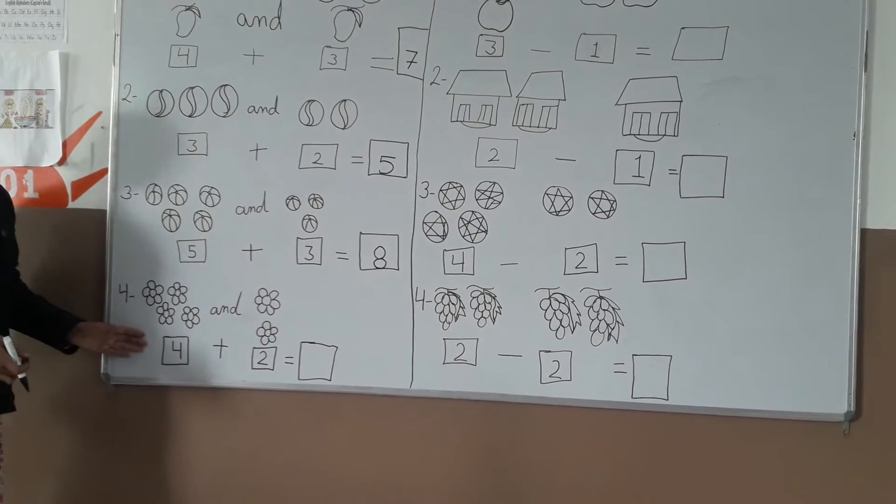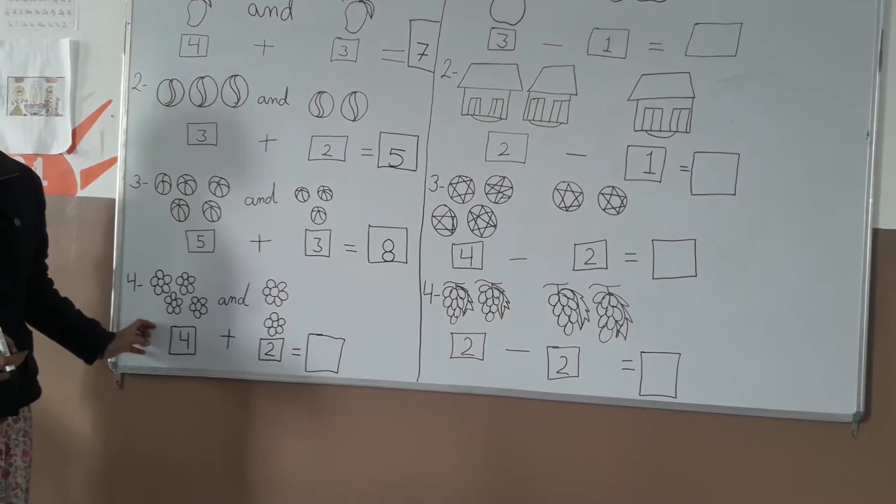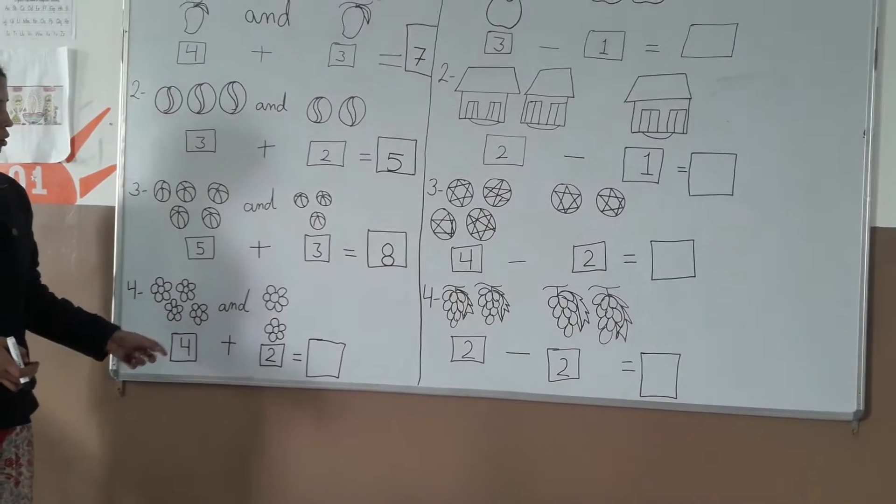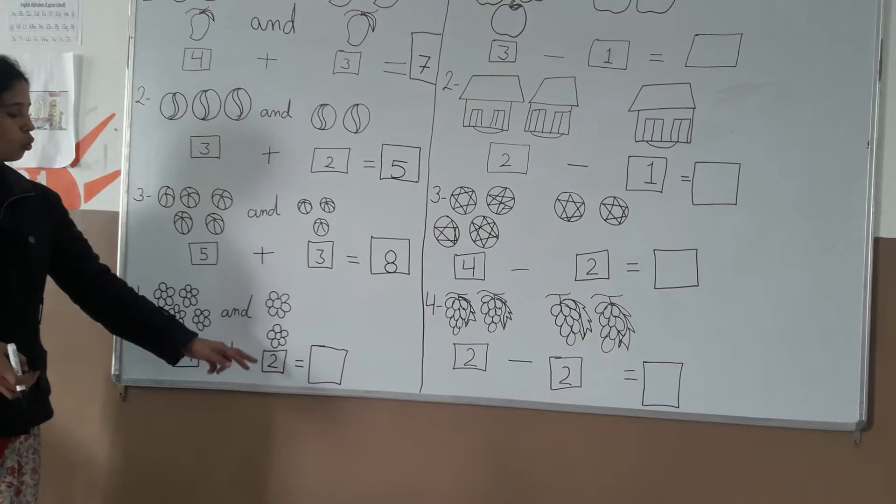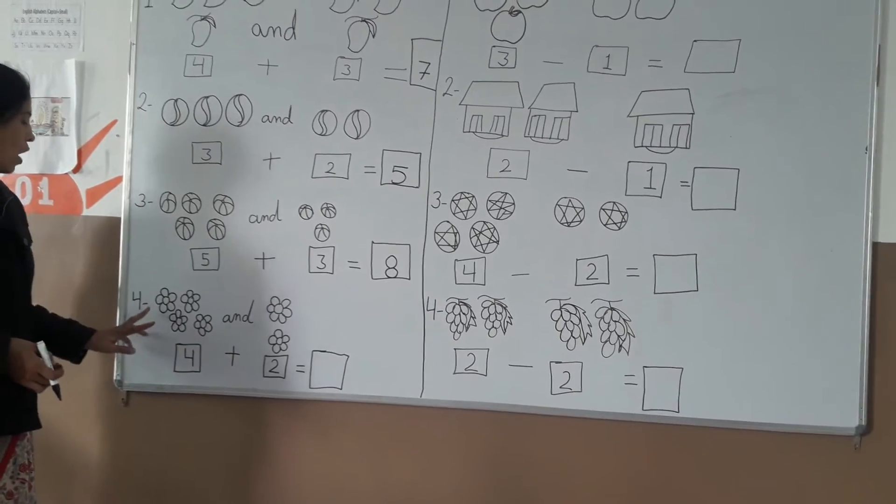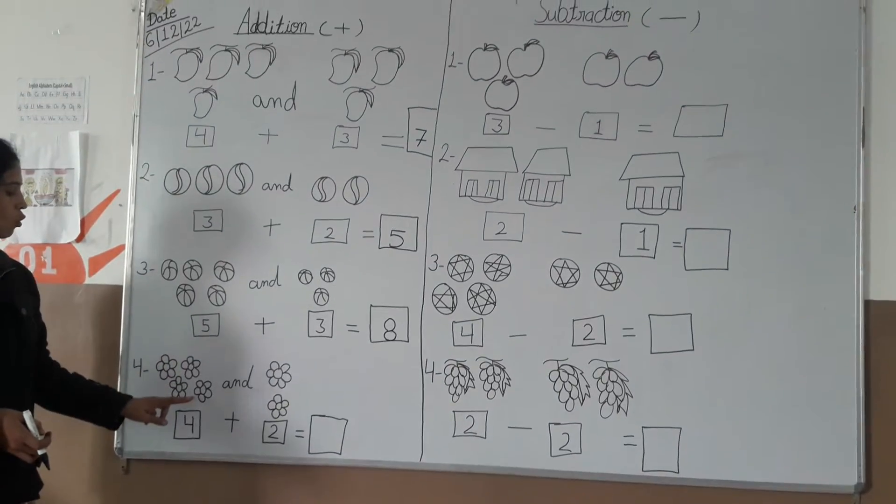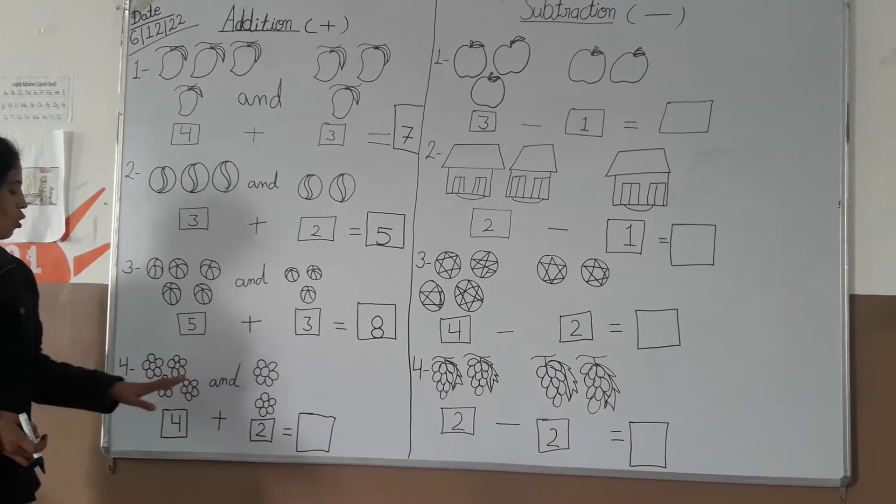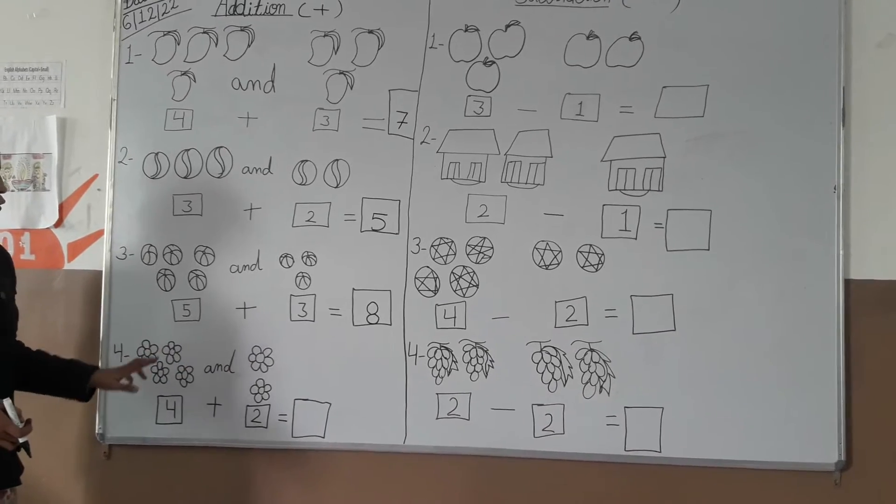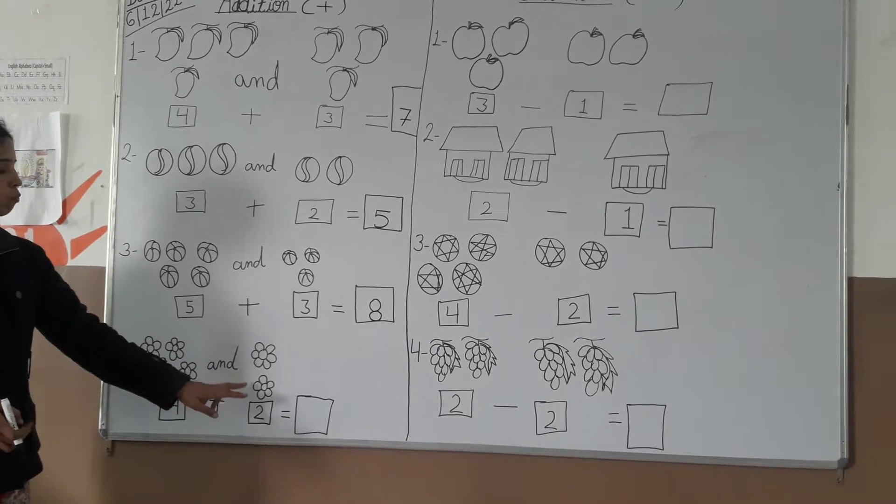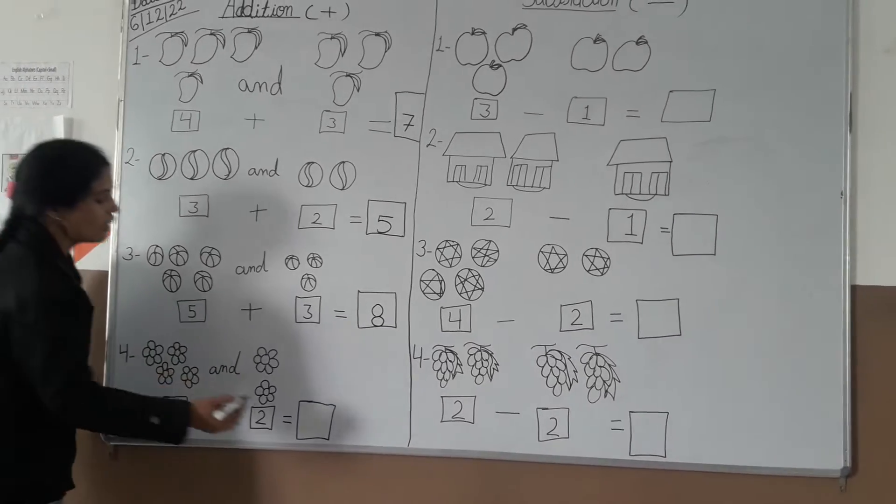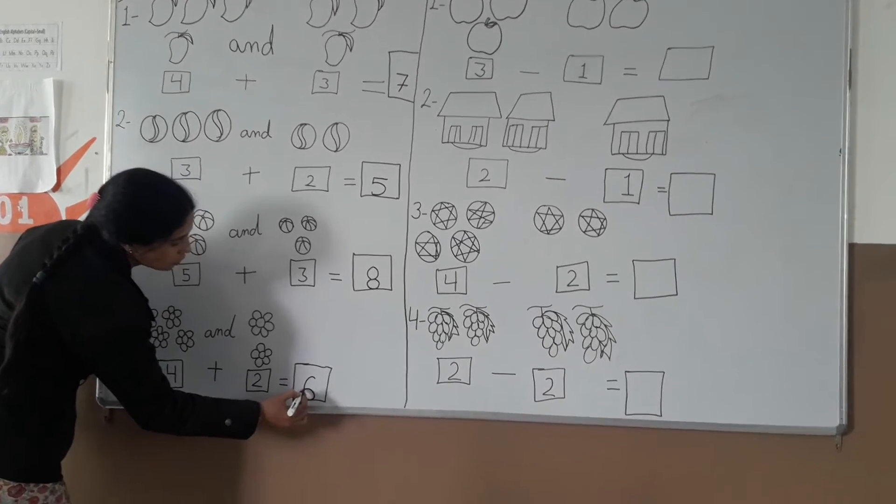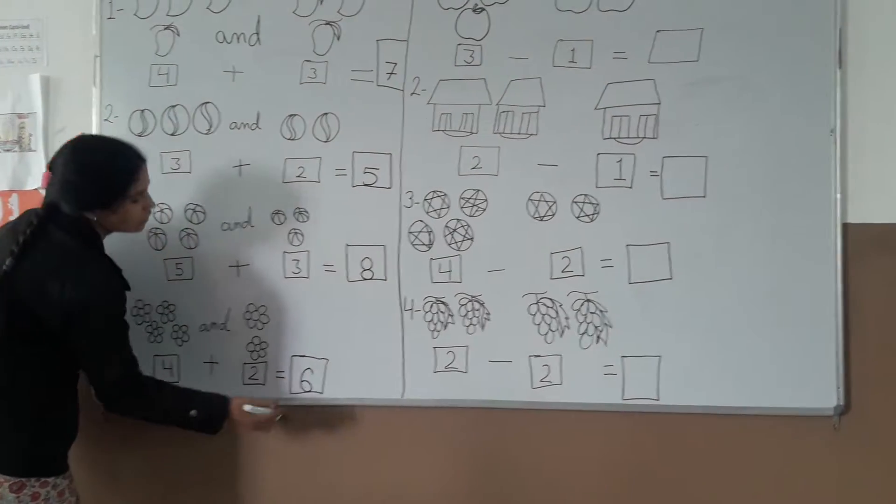Next is flowers. What is this? Flowers. One, two, three, four. Four. Next: one, two. Two. Four and two. Counting: one, two, three, four, five, six. Six. Only six flowers.